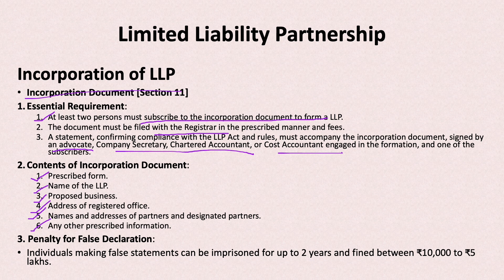All declarations and essential requirements must be correctly stated. If the information provided is false, then the person who has given false information faces imprisonment of up to two years and a fine of ₹10,000 which can extend further. Penalties apply for providing false statements in the incorporation documents.